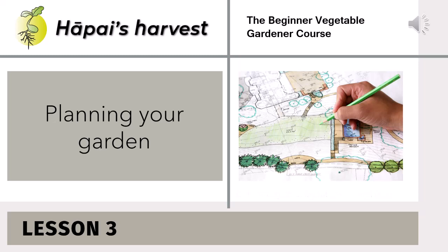In Activity 2, you will work through the many factors that influence the location of a garden. Lastly, go out to your prospective garden plot and take a few measurements in preparation for drawing a rough sketch of your garden.